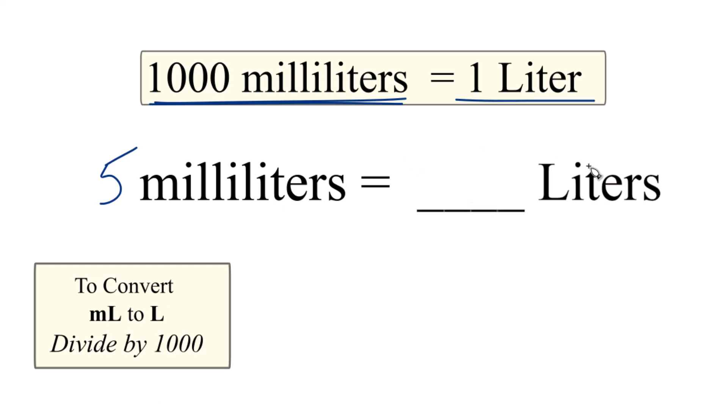To convert five milliliters to liters, we're going from milliliters to liters. We divide the milliliters by 1,000. So we have our five milliliters, and we're just going to divide that by 1,000.